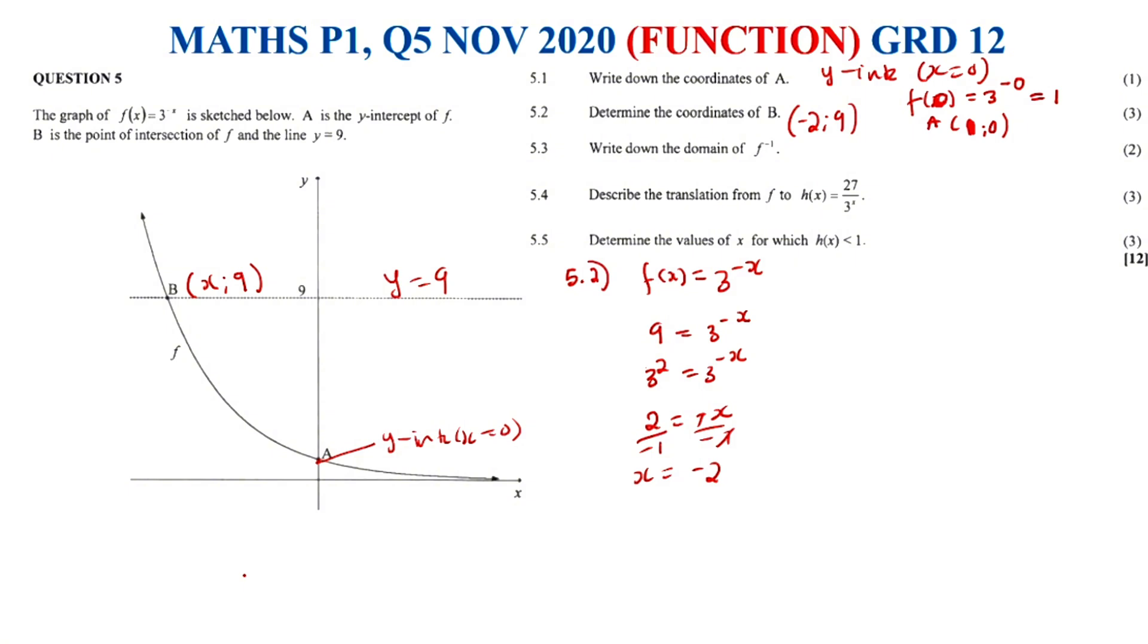And therefore 5.3. 5.3 says we need to write down the domain. The domain in this case, because we are dealing with an exponent function, the line of asymptotes here is y equals 0. This is the line of asymptotes. So our graph will never touch the x-axis.